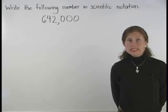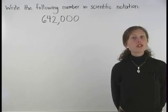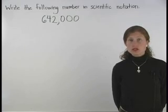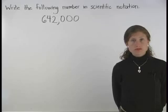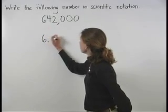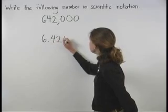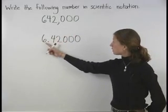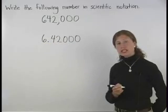To write a number in scientific notation, first write a decimal point in the number so that there's only one digit to the left of the decimal point. So here, we have 6.42000. Notice that there's only one digit to the left of the decimal point.